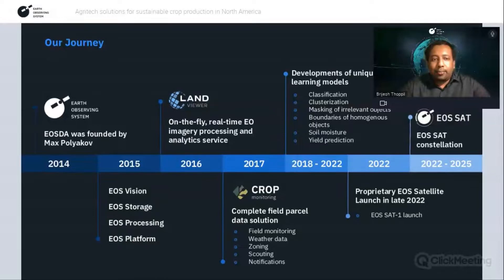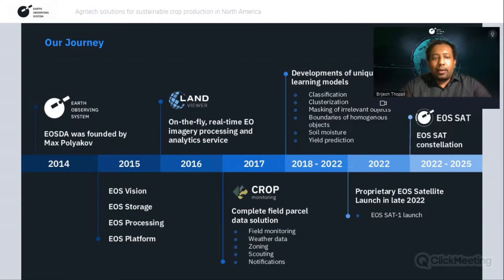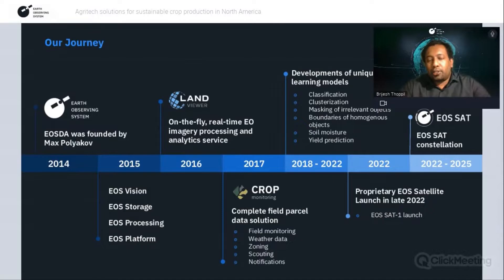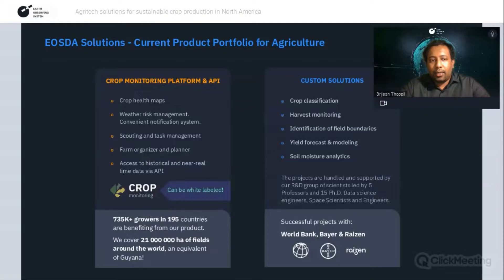In 2018, our R&D team achieved a breakthrough that enabled us to develop unique deep learning models used in classifying fields and boundaries according to crop type, clusterize fields based on particular datasets, mask irrelevant objects on satellite images, and develop custom solutions like soil moisture data analytics and crop yield forecasting. This November, we are looking forward to the launch of our own satellite constellation — our strategic direction until 2025 — to achieve complete control over satellite data production. With this, we will become the first company to launch a satellite constellation fully focused on agricultural needs.